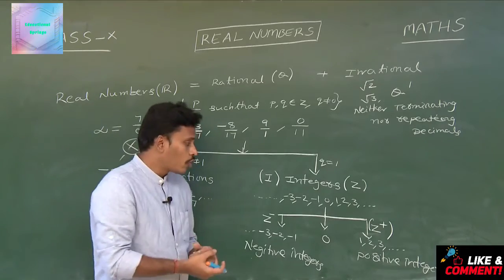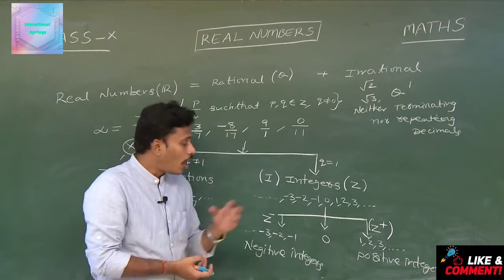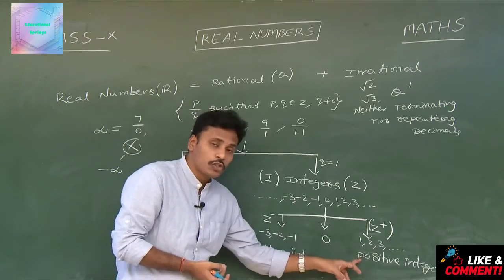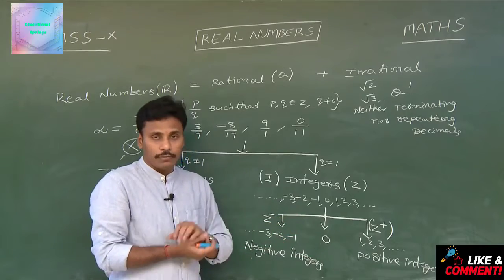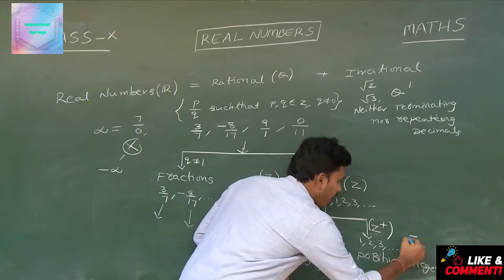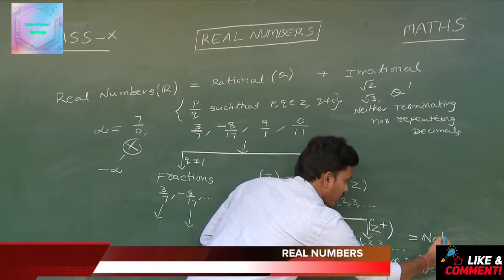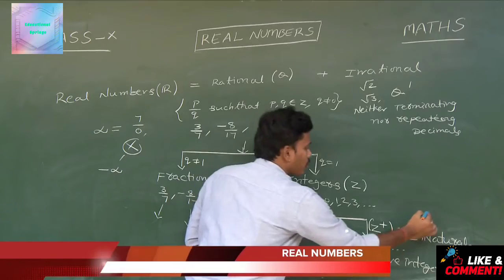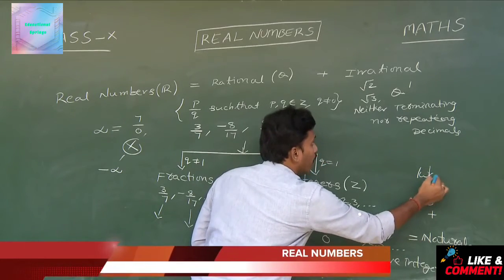These positive integers are also mentioned as natural numbers. Those natural numbers together with 0 are termed as whole numbers. Positive integers are naturals, and naturals together with 0 are termed as whole numbers.